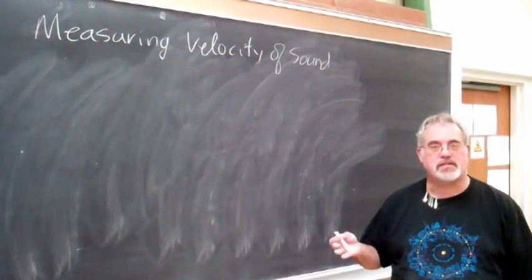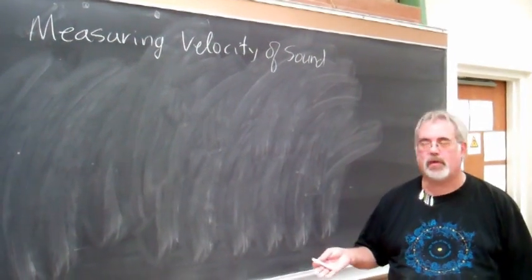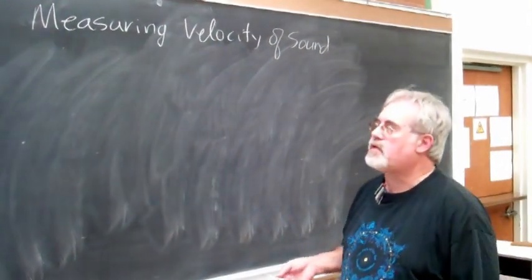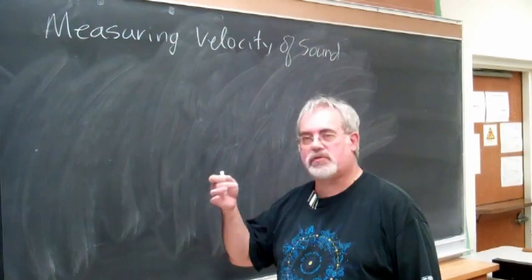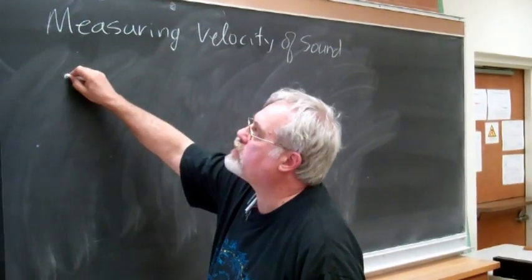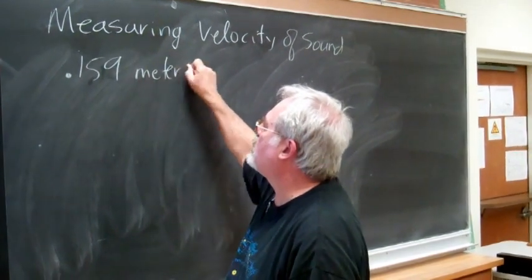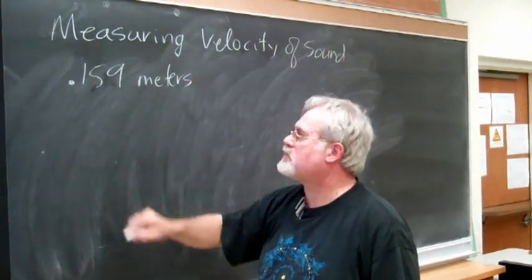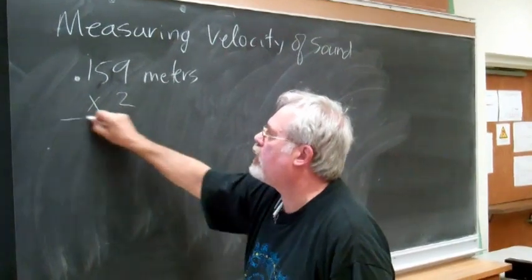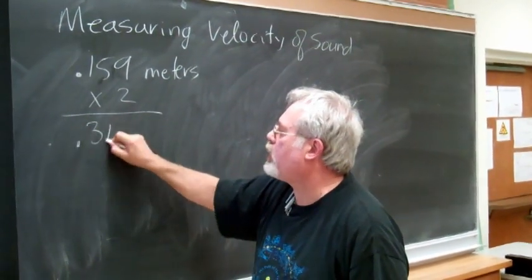All right, from our data let's calculate the velocity of sound that we've measured. The distance between two nodes was 0.159 meters. That's only half a wave. Let's multiply it by two, and we get 0.318 meters.